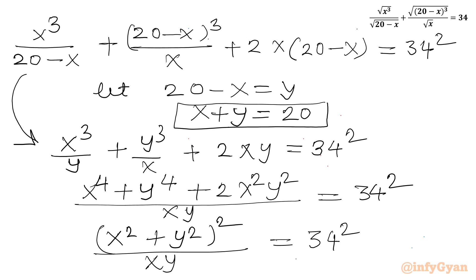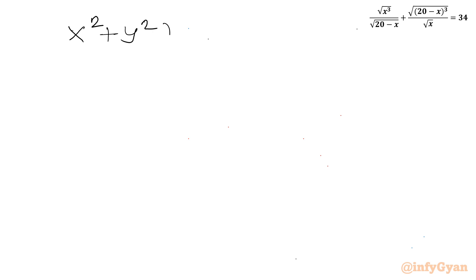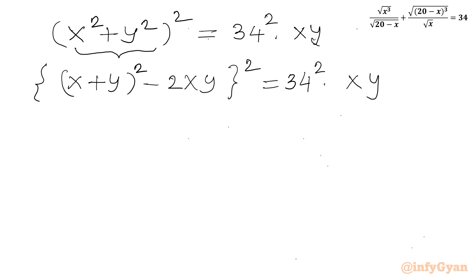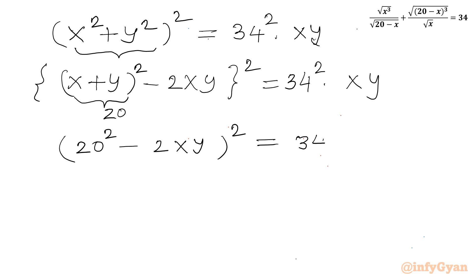Since xy cannot be 0 — x cannot equal 0 and x cannot equal 20 — we cross multiply to get (x² + y²)² = 34² · xy. Now I write x² + y² as (x + y)² minus 2xy, so we have ((x+y)² − 2xy)² = 34² · xy. Since x + y = 20, this becomes (400 − 2xy)² = 34² · xy.